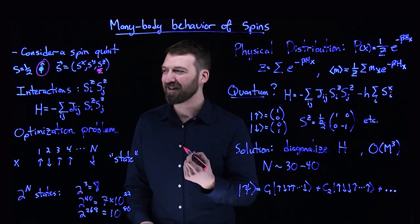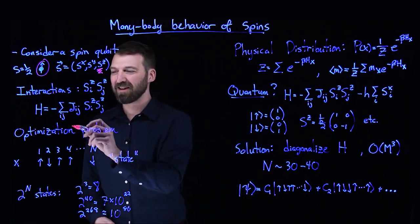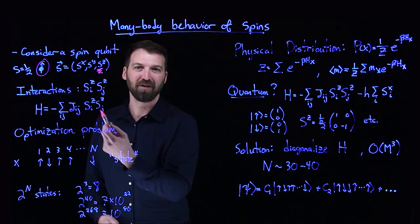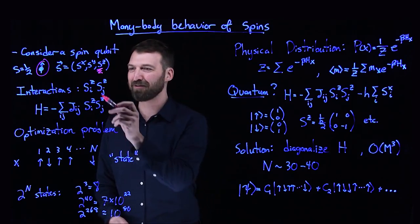For a classical set of spins, for example, like this. Here's a sum over all possible pairs of SZ spins.